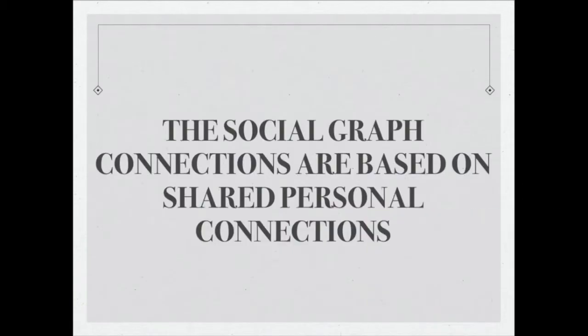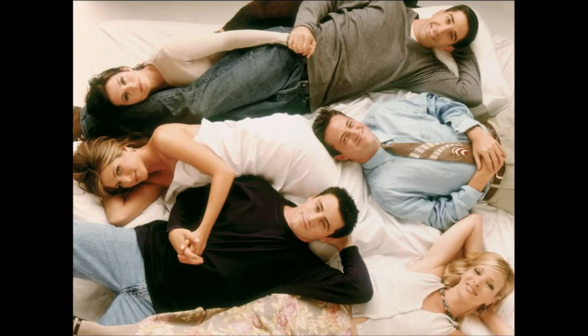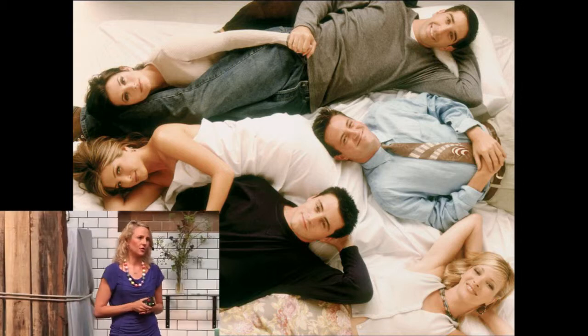The social graph is a graph based on shared connections. In the beginning it was first used in relation to Facebook, but now it's more widely used in general to describe social networking online. That's friends, friends of friends, family and friends of family — mostly people that we are somehow related to. And we like this social graph because we like our friends, and we like to listen to what they have to say.